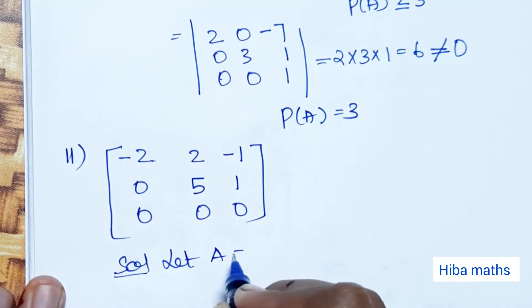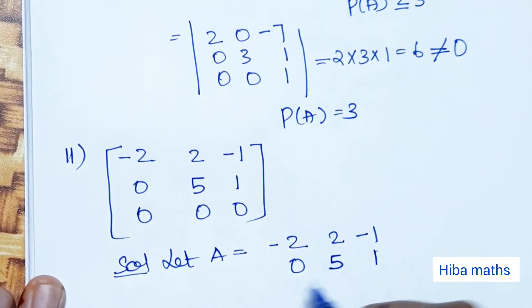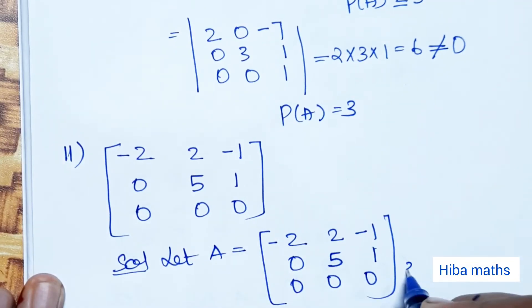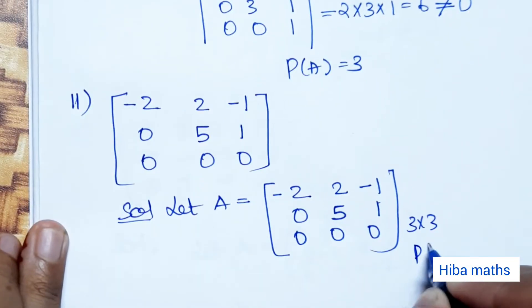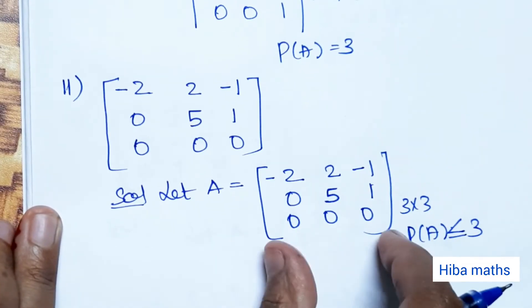For the second matrix, let A equal [-2,2,-1; 0,5,1; 0,0,0]. The order is 3 by 3, so the rank of A is less than or equal to 3.